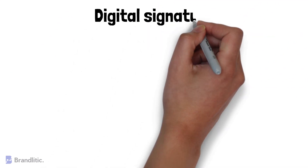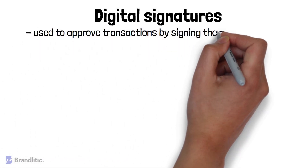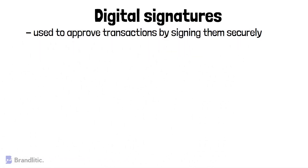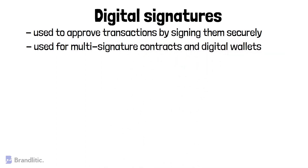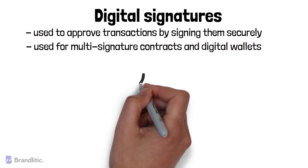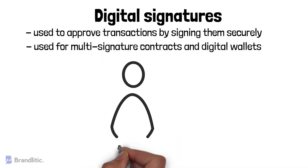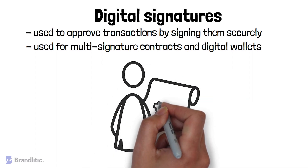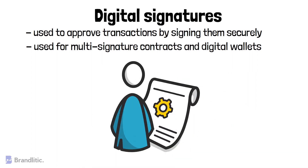Digital signatures are also widely used for cryptocurrencies. They are used to approve transactions by signing them securely, and are also used for multi-signature contracts and digital wallets on the blockchain. Do note that digital signatures from multiple different private keys are required before executing any action on the network.